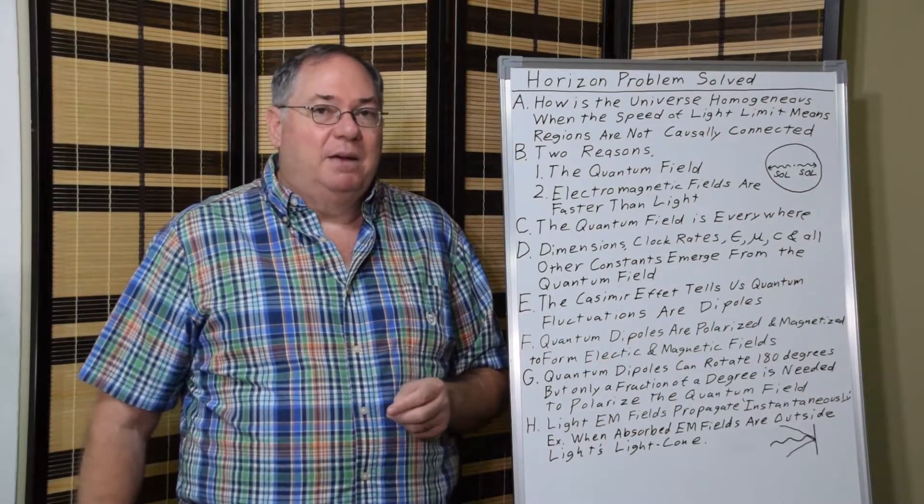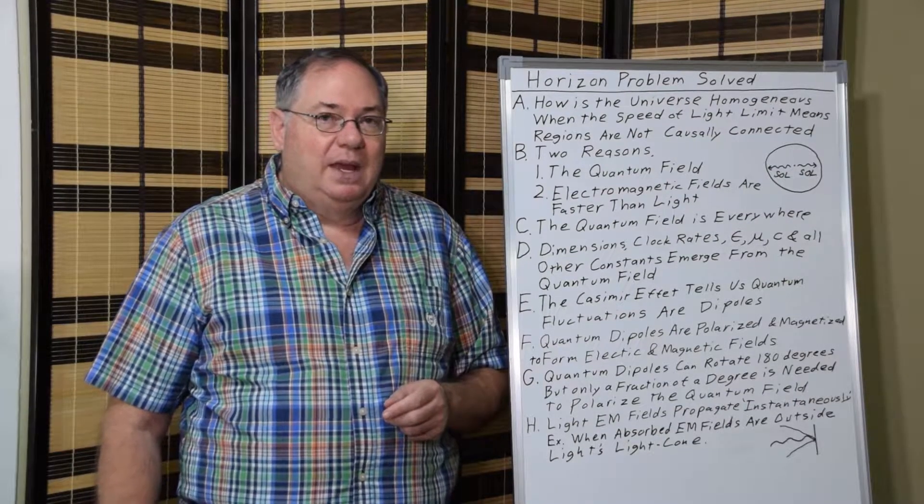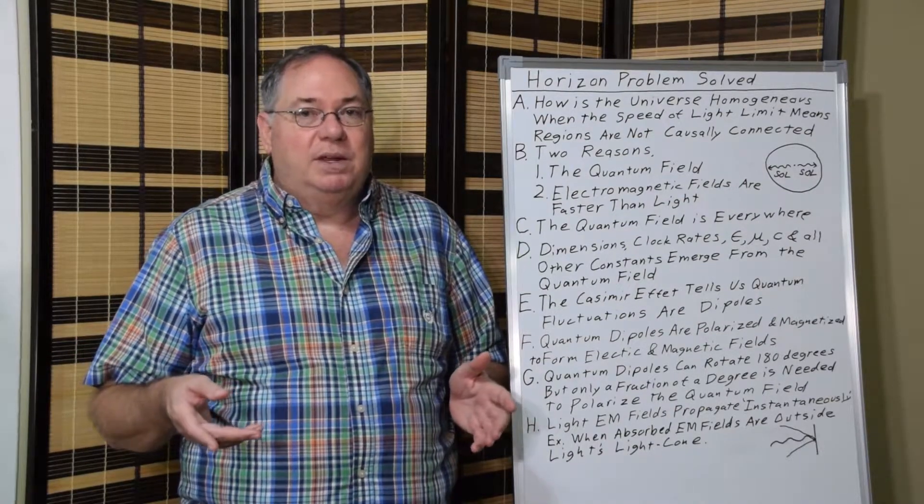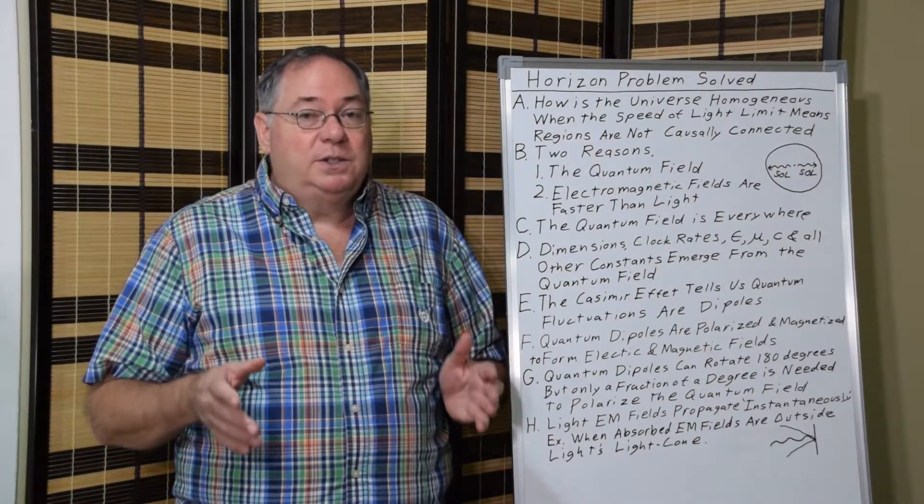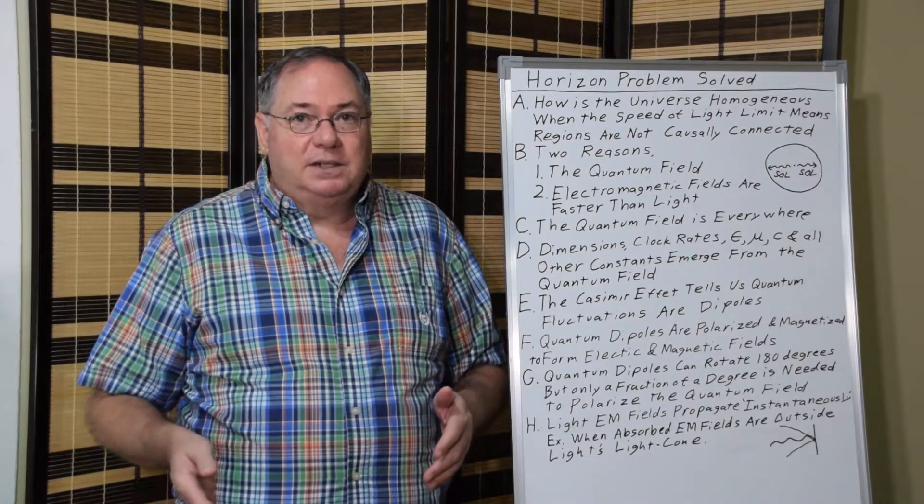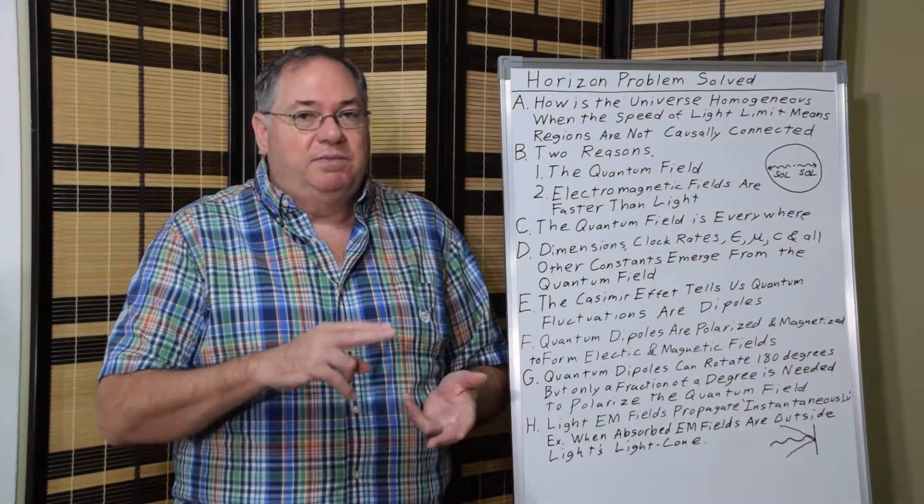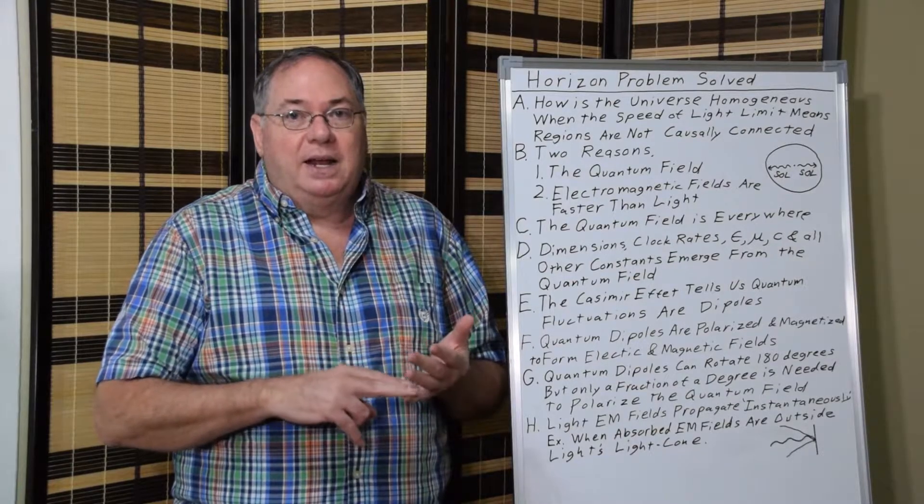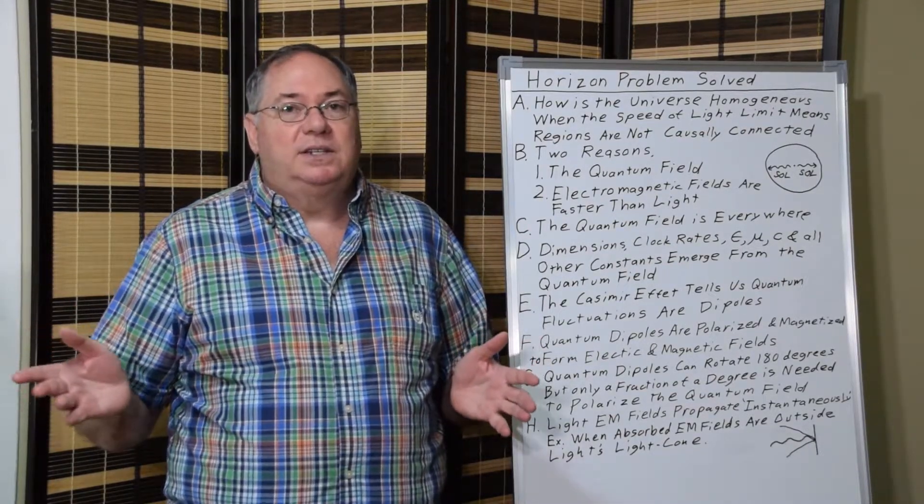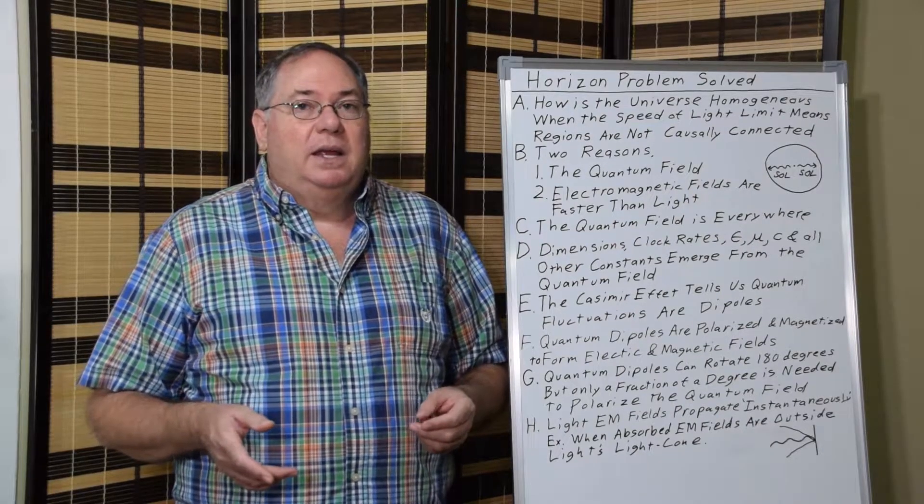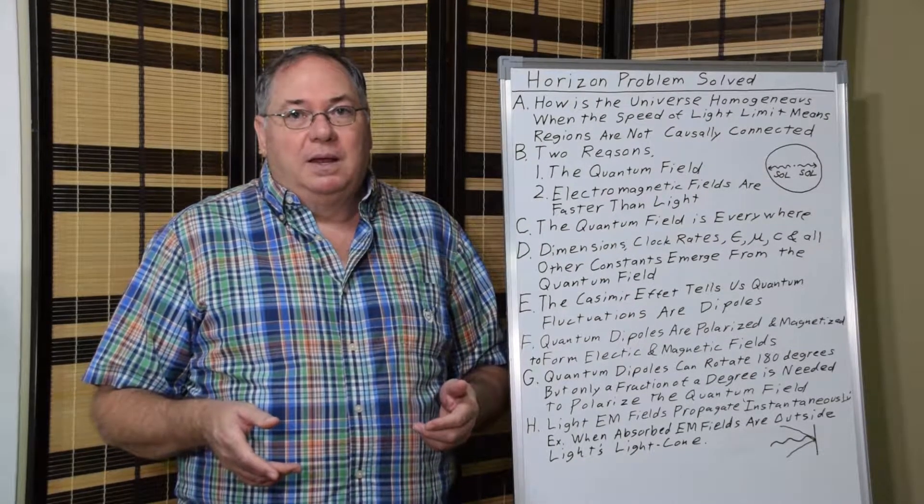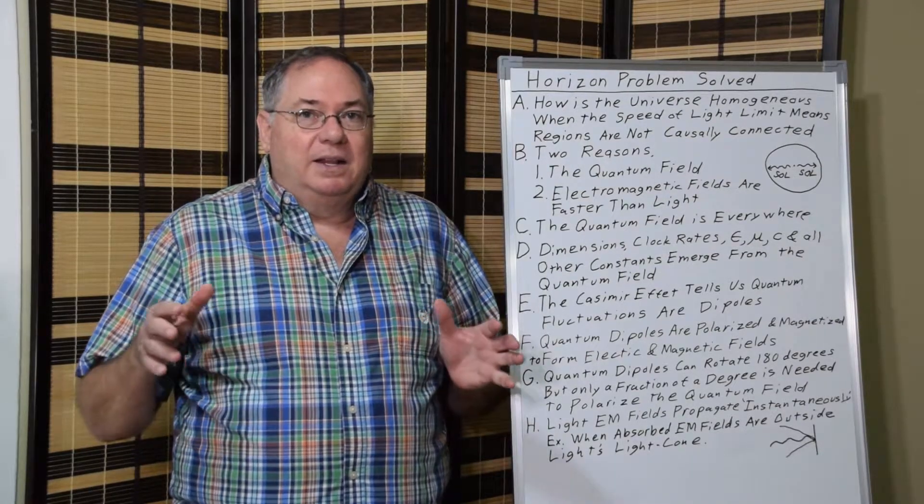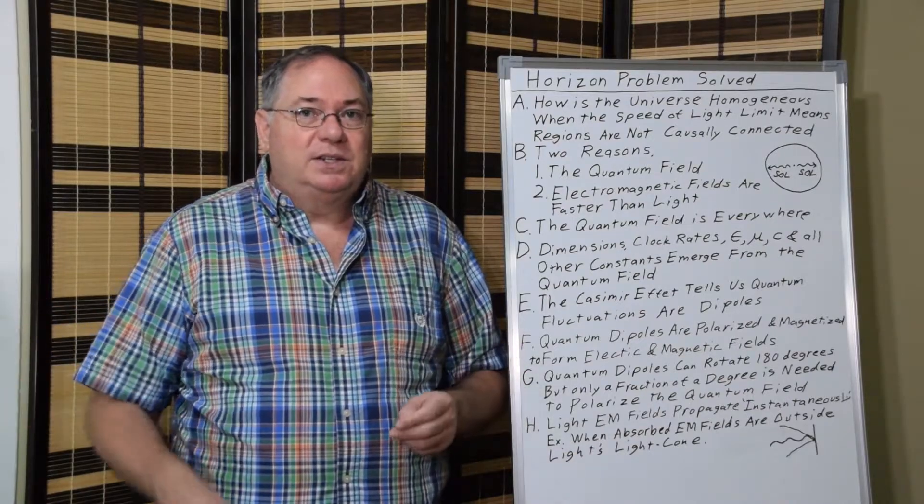And the electric times magnetic constant equals 1 over the speed of light squared. So the speed of light emerges from the quantum field. And if you go through all the physical constants, you find out they all emerge from the quantum field. So in all real space where you have quantum field present, you get your dimensions are fixed. Your clock rates are fixed. Your electric and magnetic constant and speed of light are fixed. And everything else is fixed. And that is why space is uniform. Because the quantum field is uniform everywhere. And the laws of physics are uniform everywhere.